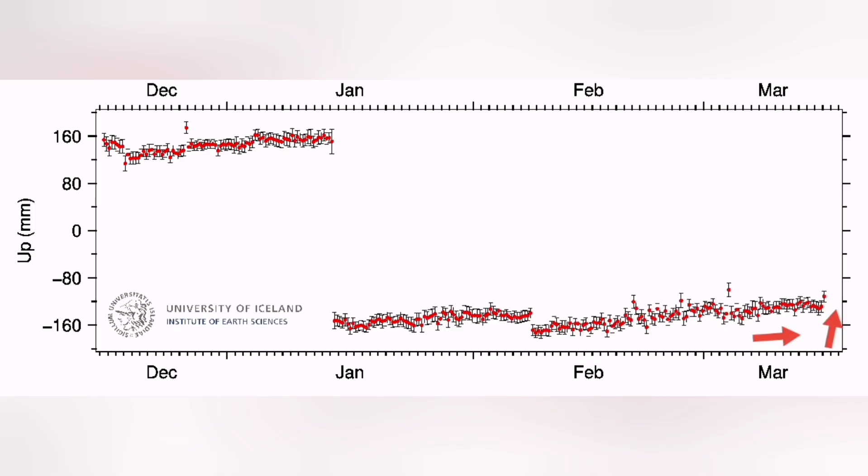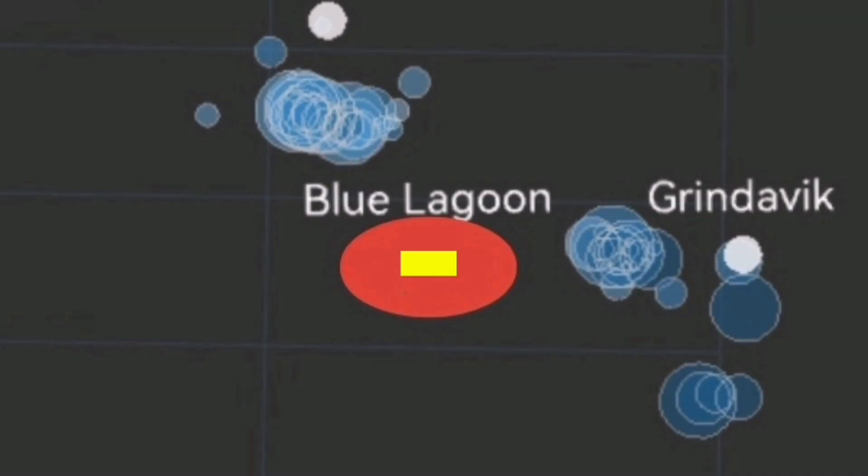Further down toward the east of Grindavik, we have AUSV, which shows some uplift due to the accumulation of magma, not as much as the previous one.